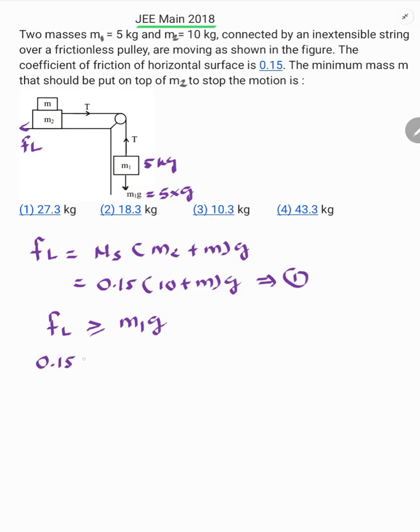So 0.15 into 10 plus M into g is equal or greater than M1g. g is cancelled. So 1.5 plus 0.15M is equal or greater than M1g, but M1g is 5 here.